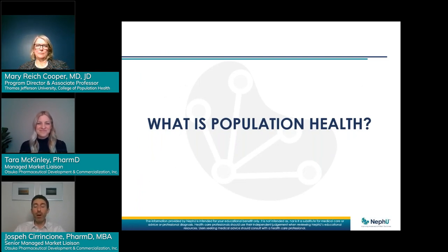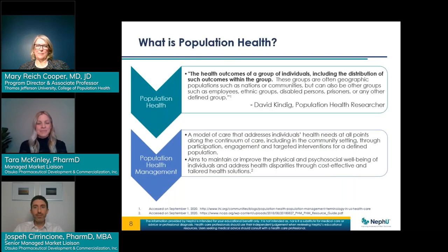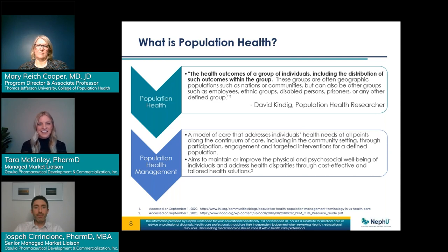Population health, while in the history of medicine has not been around as long — it's a relatively new term. In 1978 was one of the first definitions that came about, but more recently in 2003, population health researcher David Kindig coined the phrase: population health being the health outcomes of a group of individuals, including the distribution of those outcomes within the group. These groups can be very specific — such as a particular disease state like chronic kidney disease — or more broad, covering communities, nations, ethnicities, genders, and so on.